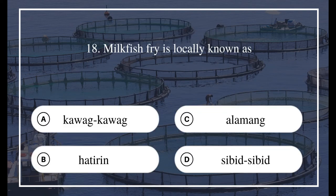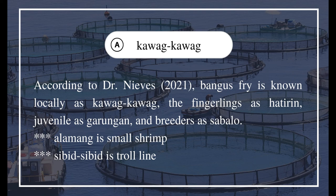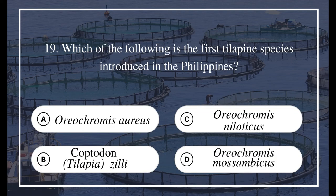Question 18: Milkfish fry is locally known as A) kawag-kawag, B) hatterin, C) lambong, D) cibed-cibed. The answer is A) kawag-kawag. According to Dr. Nieves 2021, bangus fry is known locally as kawag-kawag, the fingerlings as hatterin, juveniles as gurungan, and breeders as sabalo. A lambong is a small shrimp, and cibed-cibed is a troll line.